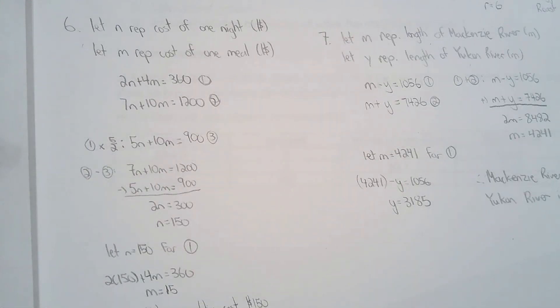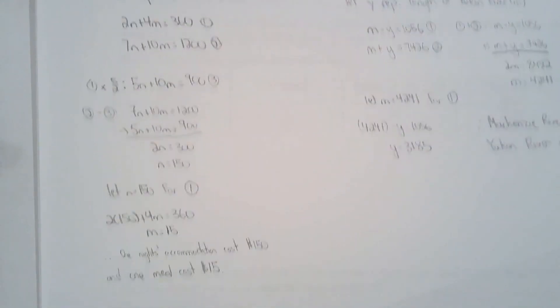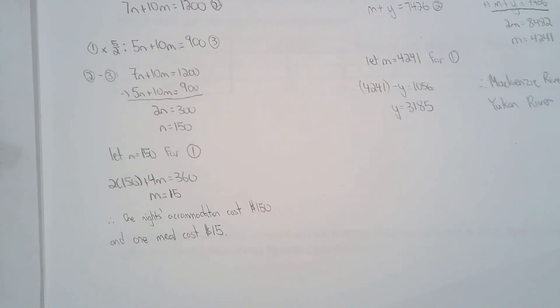I chose to multiply the first equation by five or two, which works out beautifully. No fractions still, eliminate m. So it costs $150 for a night and $15 for a meal.